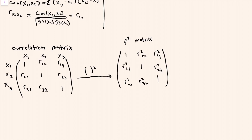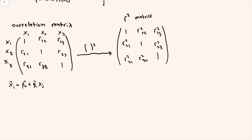For a univariate model, x-hat-i equals beta-0 plus beta-1 times x-j, where i and j can be any numbers between 1 and 3. A model like this gives you a correlation between i and j. The correlation matrix neatly summarizes the correlations — the strength and direction — of the linear relationships between each pair of the variables.